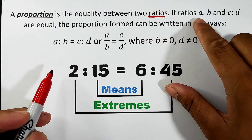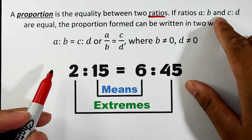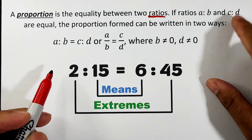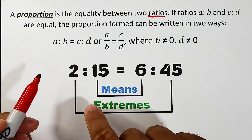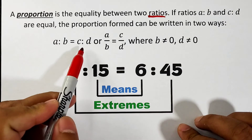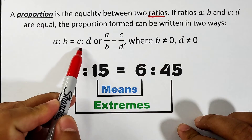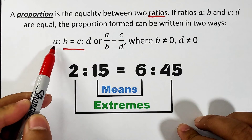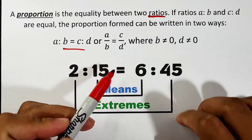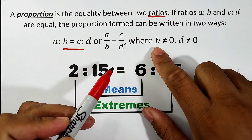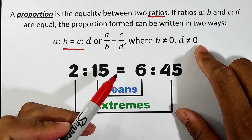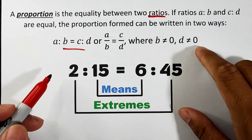If ratios a is to b and c is to d are equal, the proportion can be written in two different ways: the ratio form and the fractional form, wherein b is not equal to zero and d is not equal to zero.